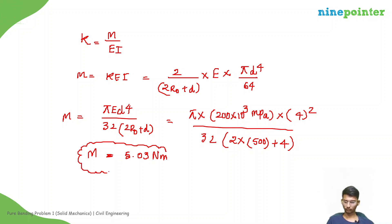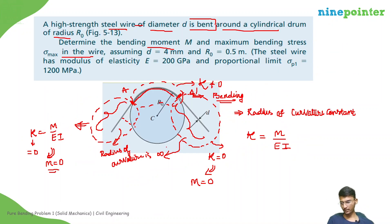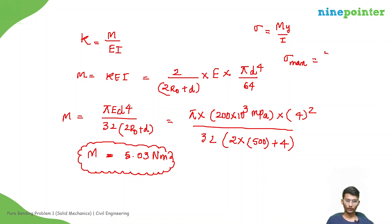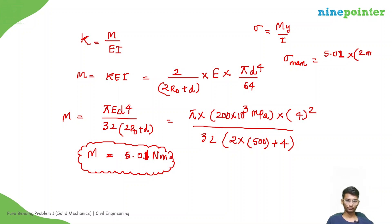Now we need to calculate the maximum bending stress. We know that sigma equals M·Y divided by I in magnitude. So sigma max equals M·Y_max divided by I. M is approximately 5.01 N·m, Y_max equals d by 2, which is 4 divided by 2 equals 2 mm. I equals π d⁴ divided by 64. Calculate this value to get sigma max — comment the answer in the comment section.